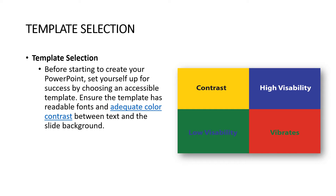Before starting, set yourself up for success by choosing an accessible template. Ensure the template has readable fonts and adequate color contrast between text and the slide background. For example, yellow background with black font has the most contrast and is easiest to read. High visibility would be white font with a dark blue background. Low visibility would be something like green background with blue font — harder to read for someone with visual impairment. Red background with green font can appear to vibrate and is not accessible.